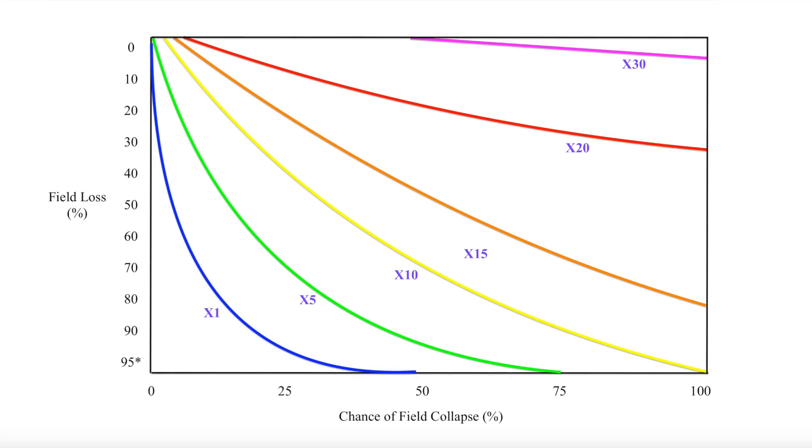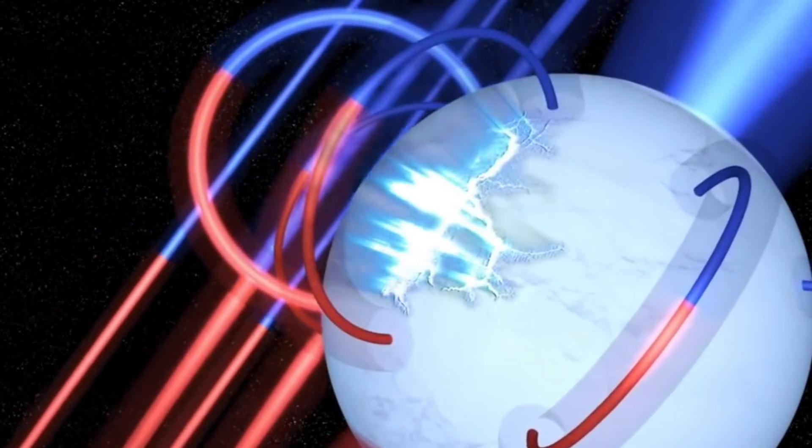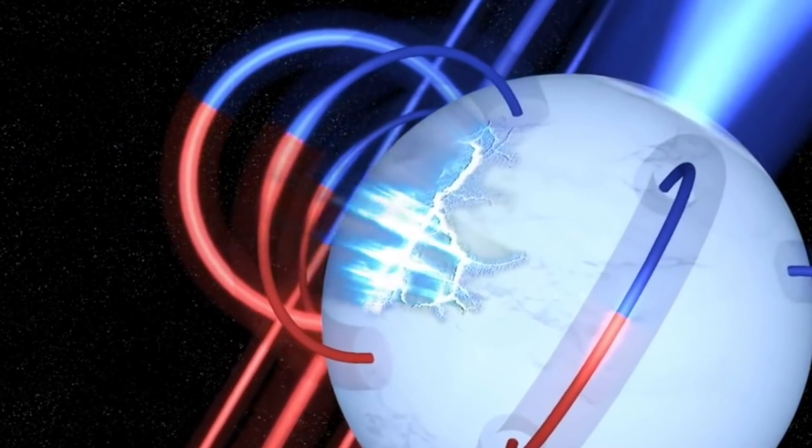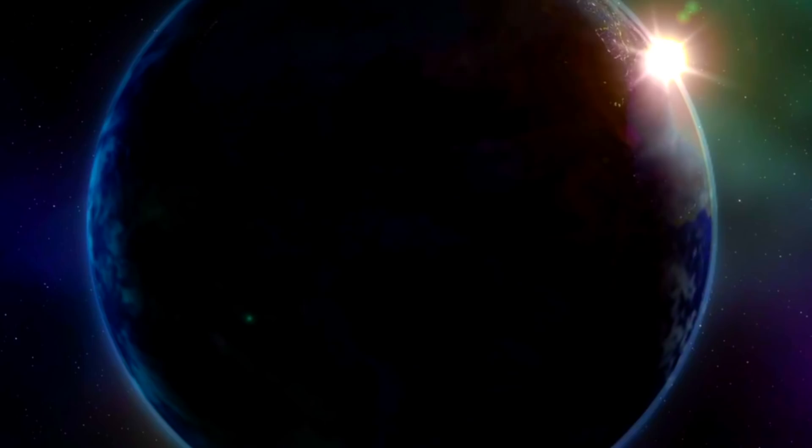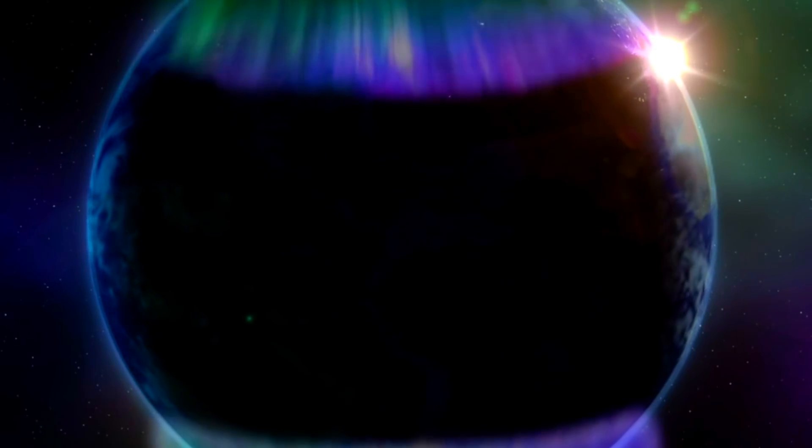In part 3, we discussed how risky solar flare levels and their associated CMEs would be for a magnetic field collapse scenario at Earth. Whether that causes an L-shell discharge similar to a magnetar, the loss of the global grid, or the final blow to Earth's ongoing magnetic reversal, which we discussed in parts 1 and 2.